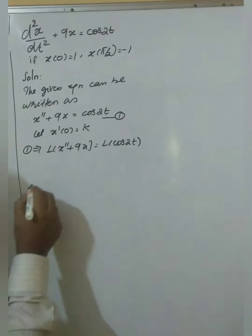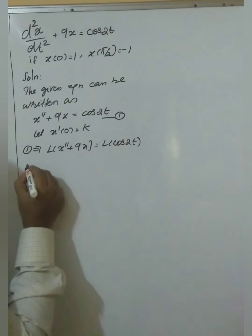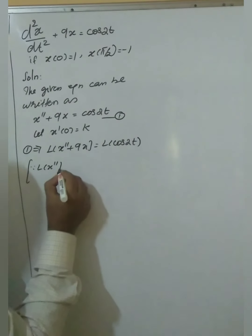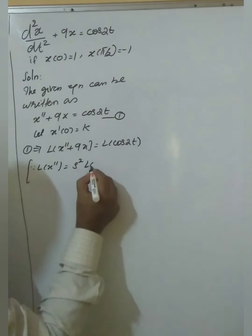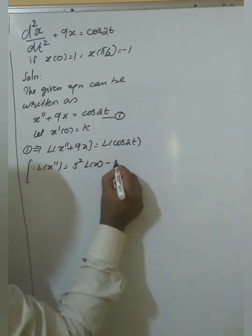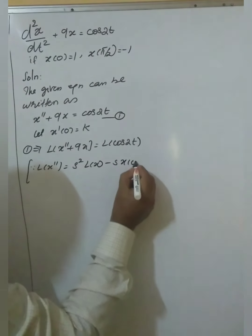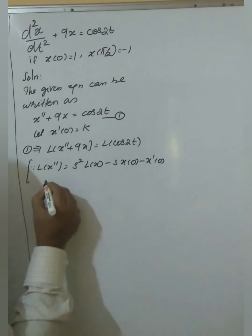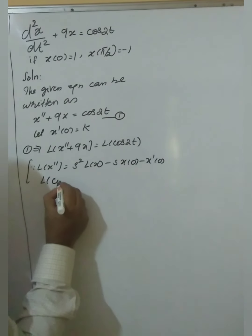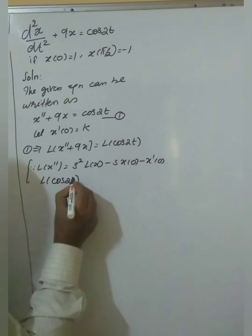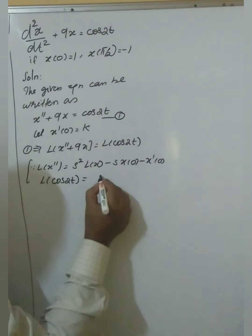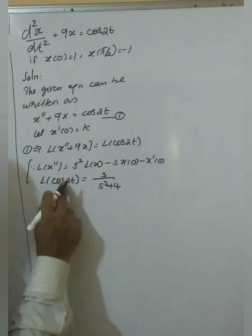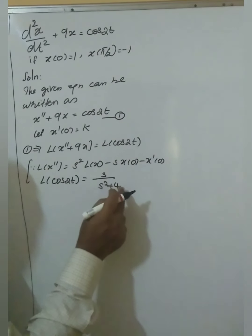Now we can apply the formula. L of x'' equals s² · L(x) minus s · x(0) minus x'(0). Then L of cos 2t equals s divided by s² plus 4. Generally, L of cos(at) equals s over s² plus a². Here a equals 2, so s over s² plus 4.